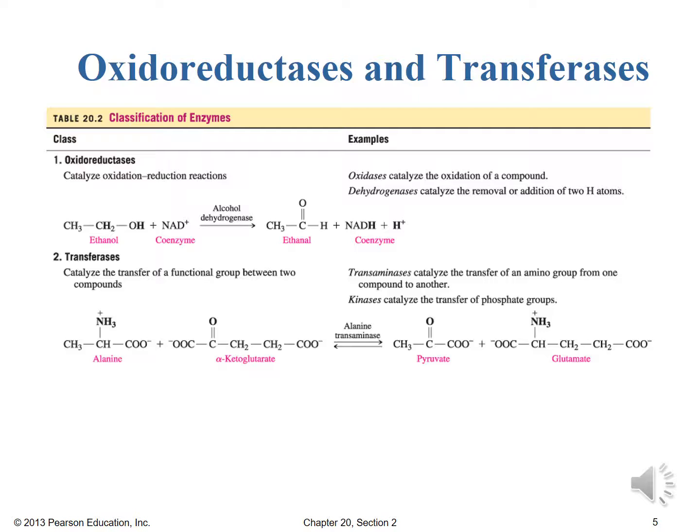And we see here a specific reaction ethanol and the coenzyme NAD plus. In the presence of the enzyme alcohol dehydrogenase forms ethanal. We've taken that ethanol and oxidized the alcohol to an aldehyde.